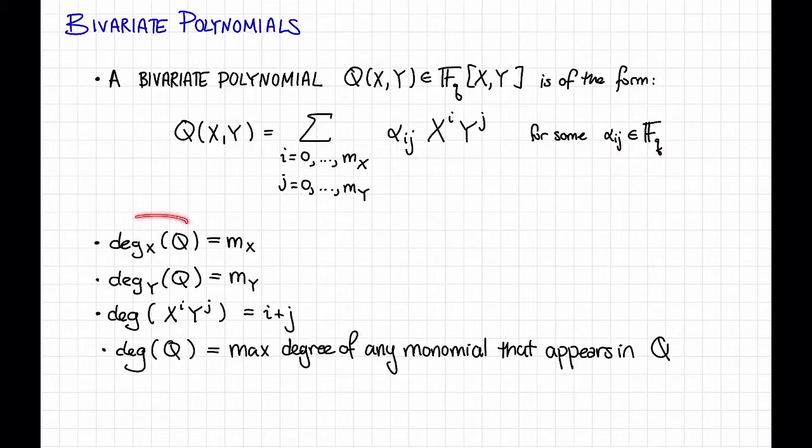Some jargon: we say that the X-degree of Q is m_x, the maximum degree on X that appears in the polynomial. The Y-degree similarly is m_y, the maximum degree on Y. The degree or total degree of a monomial X^i Y^j is i+j, and the total degree of the polynomial Q is the maximum total degree of any monomial that appears in Q.